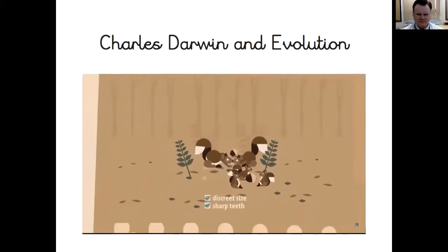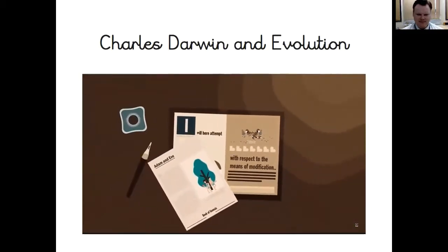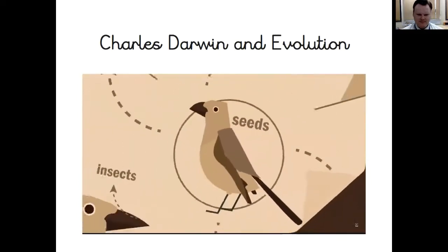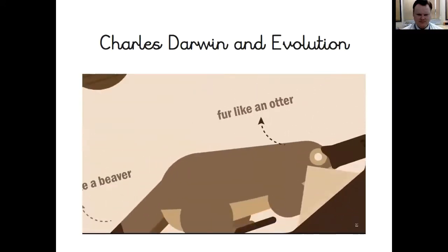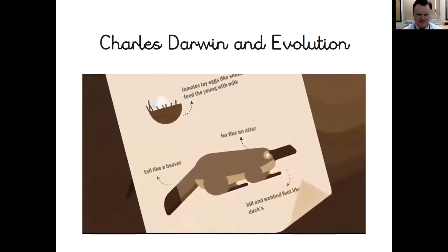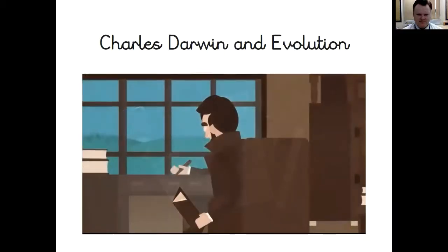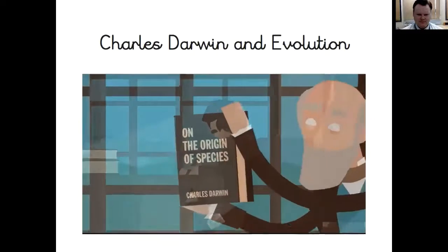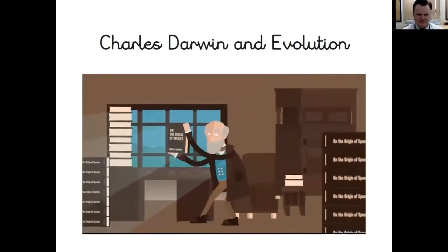Everything fit together, but there was a final hurdle — Darwin, like the society he lived in, was deeply religious, and all the evidence he'd found contradicted Christian beliefs. It would take him over 20 years to write and publish his revolutionary book 'On the Origin of Species', but when he finally did, it became one of the most influential scientific treatises of all time.